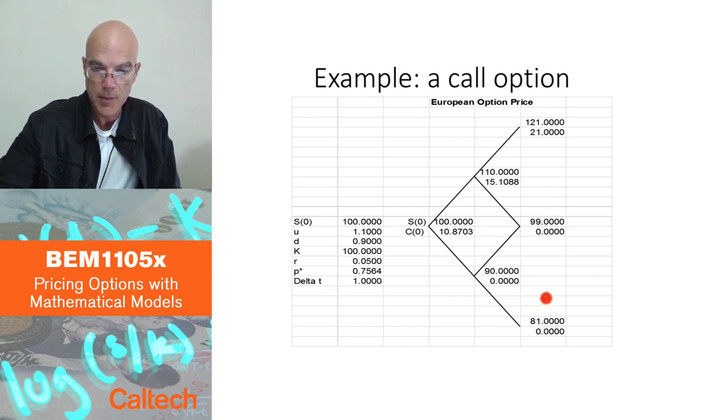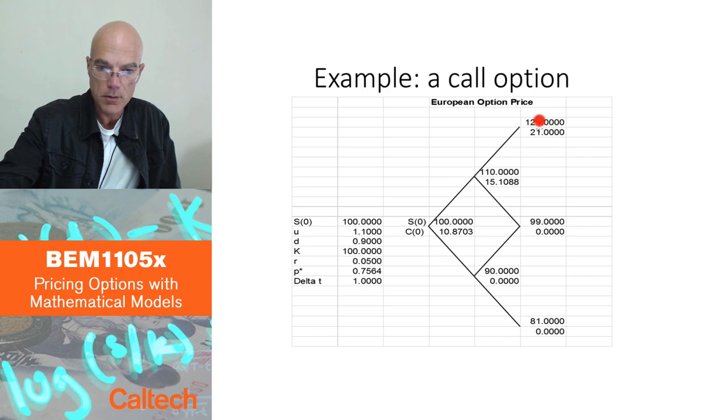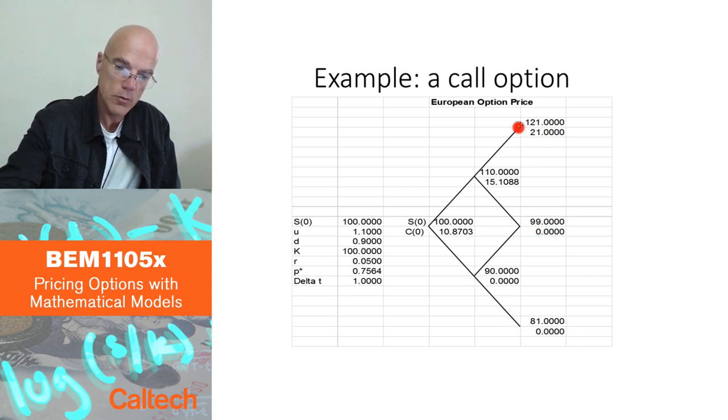Now, I'm going to compute option prices. I start at the end, at maturity. It's a call option, European call option. So the payoff here is 121 minus 100, 21. The payoff here is 99 minus 100. That's negative. Maximum 0. It's 0. 81 minus 100 is negative. Maximum 0, 0. So fine. I have my option prices at the end. Now, I'm going to average them backwards, 2 by 2. These two branches, these two branches, to get prices here. This one is easier. Very easy, because I'm averaging 0 and 0. The price here will also be 0.